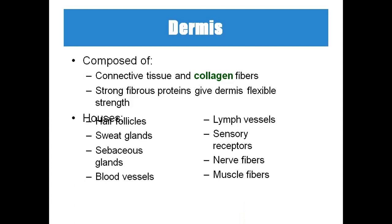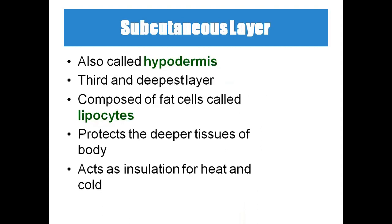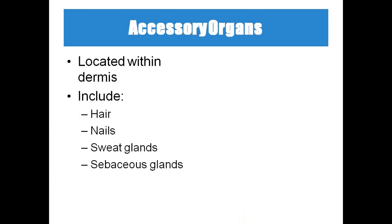The subcutaneous layer, also called the hypodermis, is the third and deepest layer. It is composed of fat cells called lipocytes. It protects the deeper tissues of the body and acts as insulation for heat.